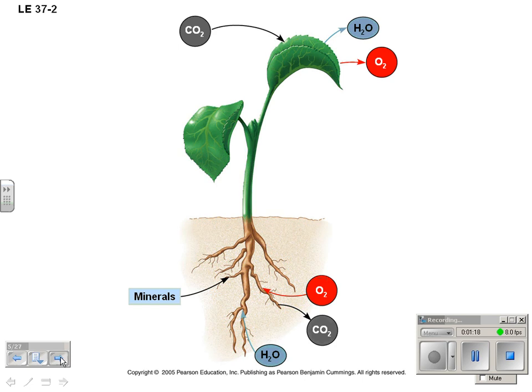Here's another overview: carbon dioxide comes in at the leaves, oxygen and water go out of the leaves, and oxygen enters at the roots. Quick reminder why — cell respiration. Water and other minerals also come in through the roots.